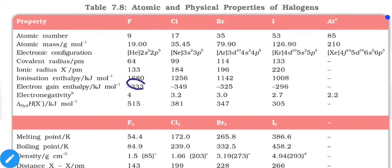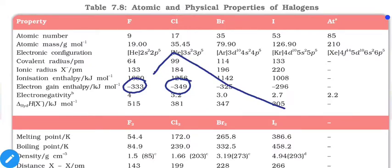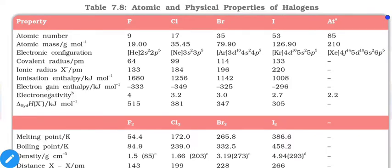Although fluorine is the most electronegative element, it releases less energy upon electron gain compared to chlorine. From chlorine onward there is a regular decrease. The reason for this anomaly is fluorine's very small size — electron-electron repulsion is quite high in the small 2p orbital, making electron addition difficult. In chlorine, electrons are farther apart, producing less repulsion toward the incoming electron, so electron addition is easier and the reaction is more exothermic.